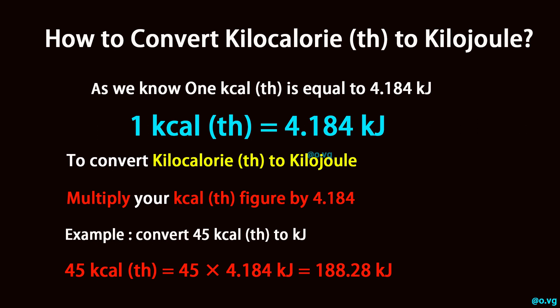1 kilocalorie th equals 4.184 kilojoule. To convert kilocalorie th to kilojoule, multiply your kilocalorie th figure by 4.184.